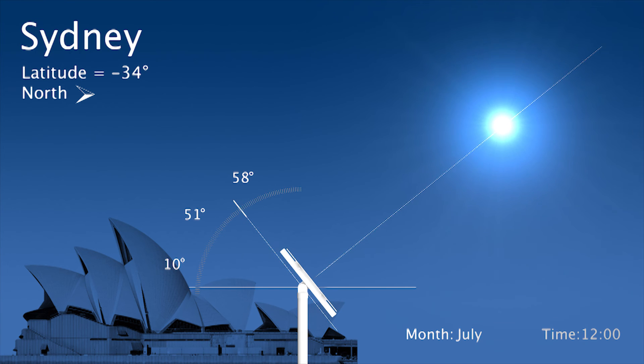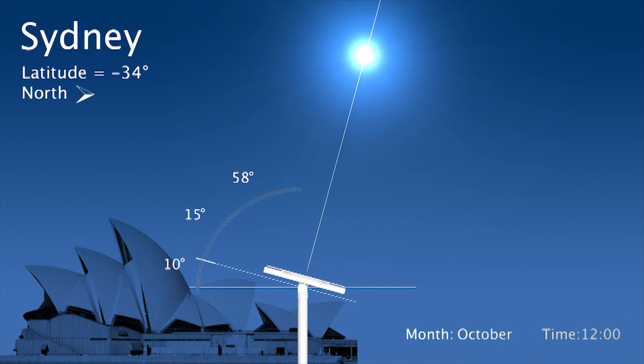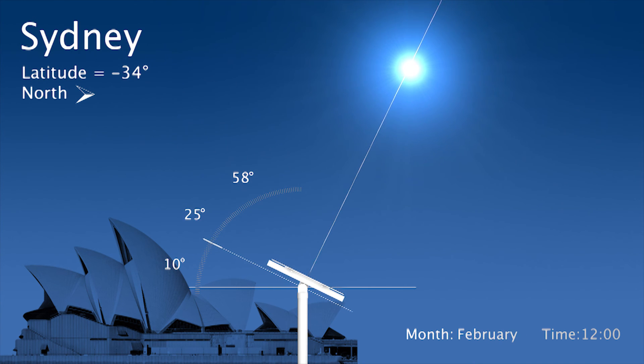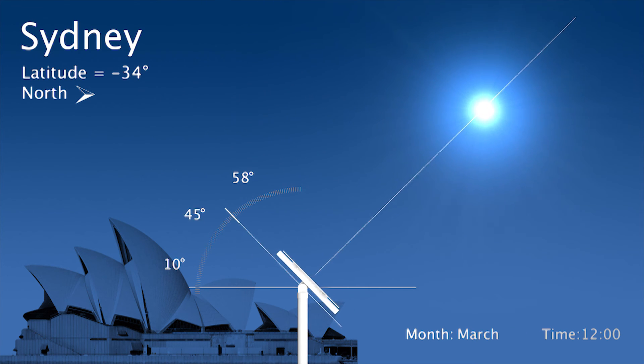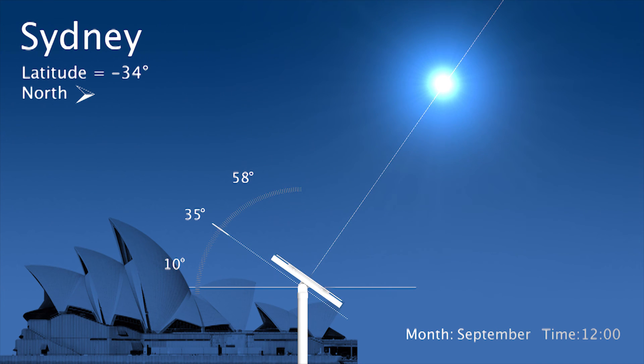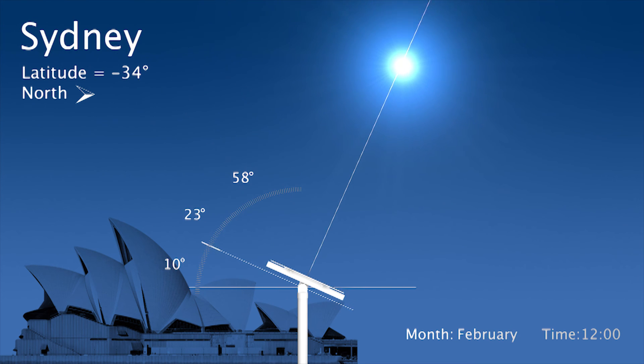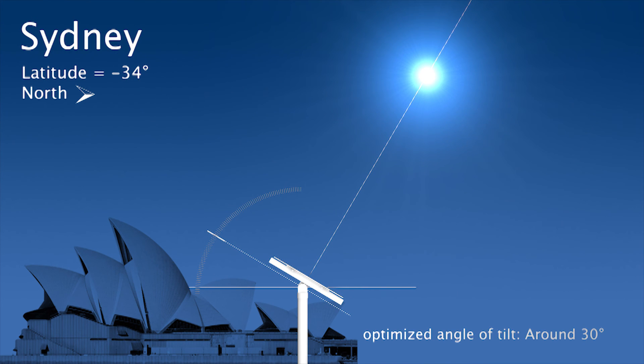Now, let's go to the southern hemisphere with a solar panel mounted in Sydney. Sydney has a latitude of around 34 degrees. Note that being in the southern hemisphere, the panel is oriented towards the north. We see that the range of tilts experienced by the PV panel is from 10 degrees to 58 degrees. The optimized angle of tilt in such a case would be around 30 degrees facing north.